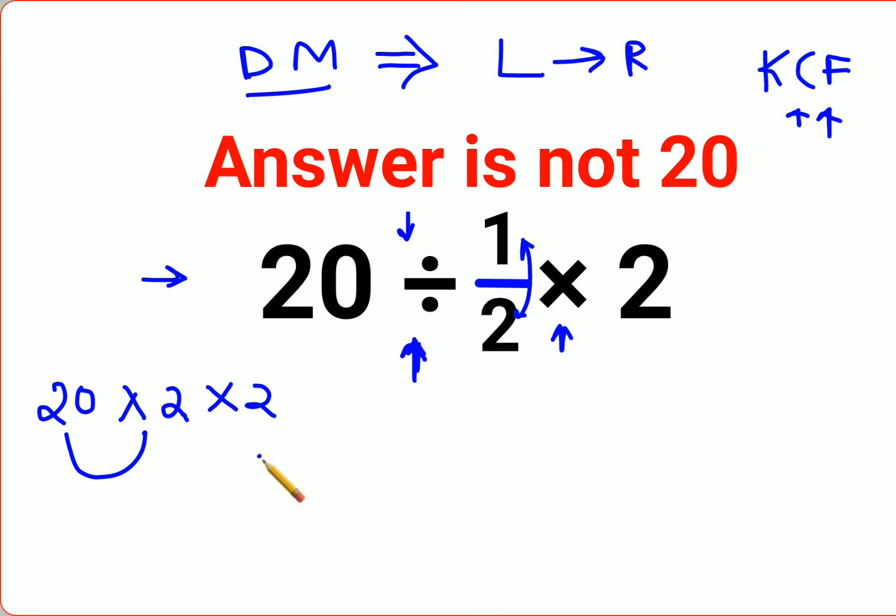First we'll do 20 into 2, which gets you 40, into 2, that gets you 80. Now you might be wondering, when will the answer for this one be 20? The answer for this question will become 20 only if they had given this in brackets.